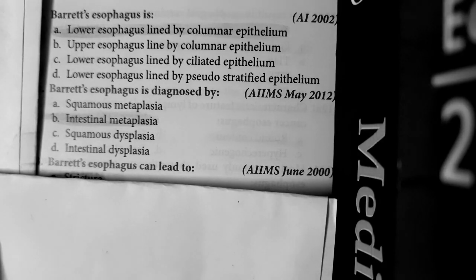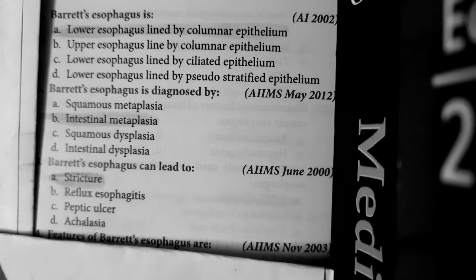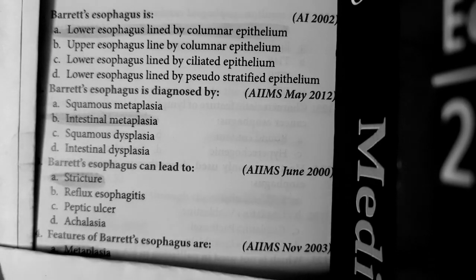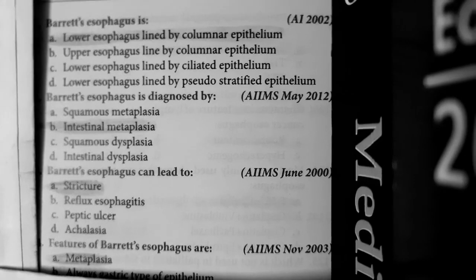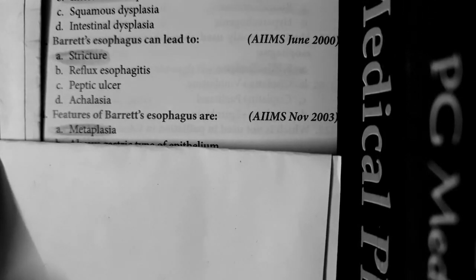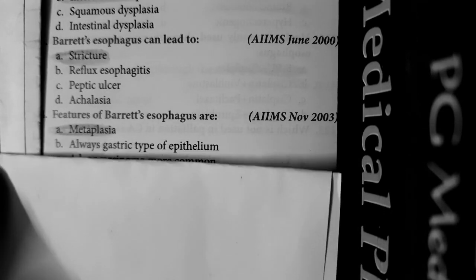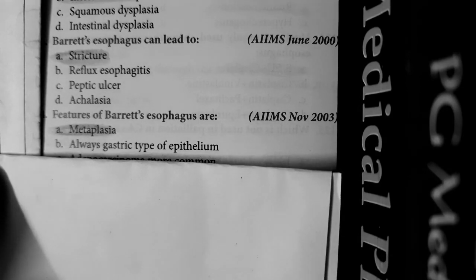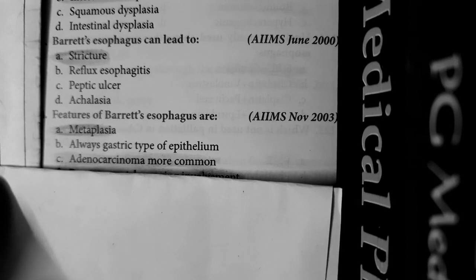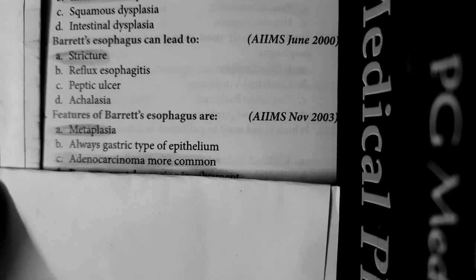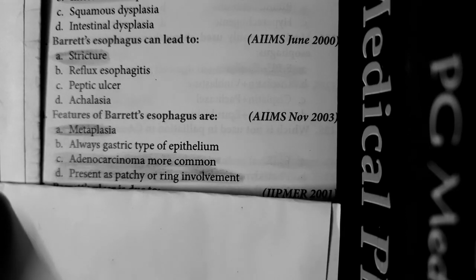Question number 3: Barrett's esophagus can lead to stricture formation most commonly. Question number 4 covers the features of Barrett's esophagus. Metaplasia, yes — squamous epithelium of the lower esophagus is replaced by columnar epithelium. The statement 'always gastric type of epithelium' is not true; the epithelium can be intestinal type or gastric type. Adenocarcinoma is more common — true, because Barrett's esophagus predisposes to adenocarcinoma due to intestinal metaplasia. It presents as patchy or ring involvement, which is also true.